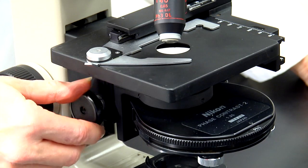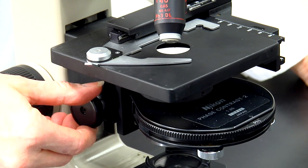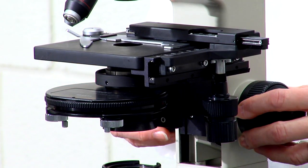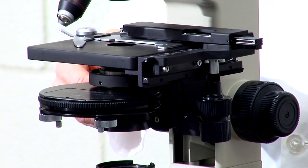For our purposes, adjust the condenser lens system close to its highest position. And when focusing, you want to be careful that you don't accidentally touch this knob instead of the magnification knob.